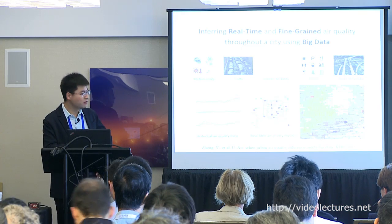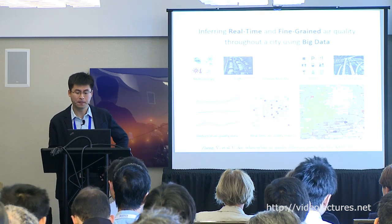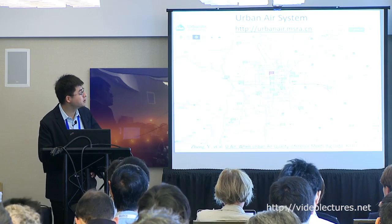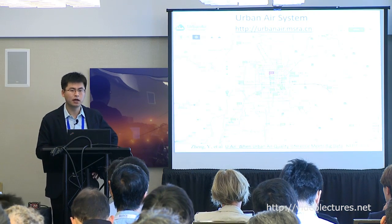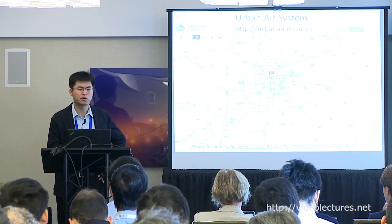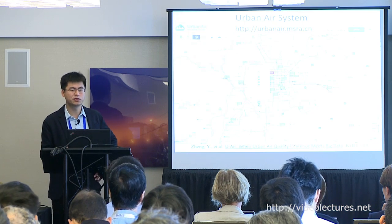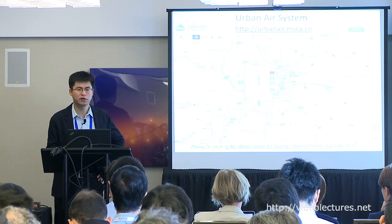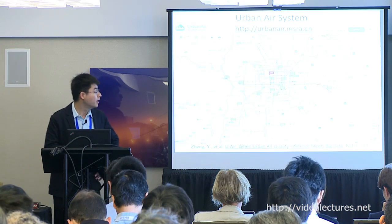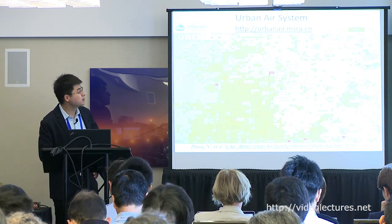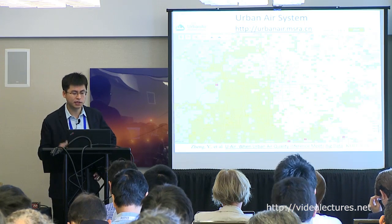Such fine-grained information can really inform government decision-making. This is a real system deployed in China — it now covers 300 cities and is deployed with the Chinese Ministry of Environmental Protection. You can see the fine-grained air quality information across the entire city.